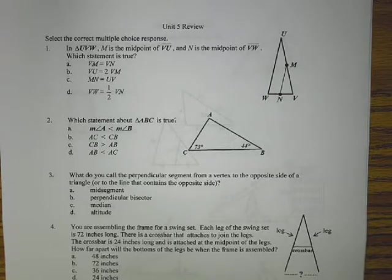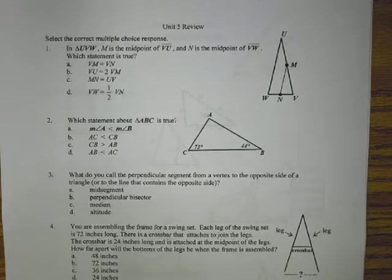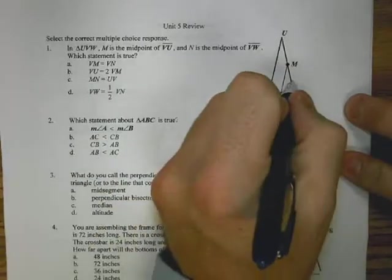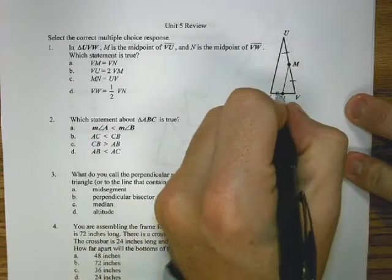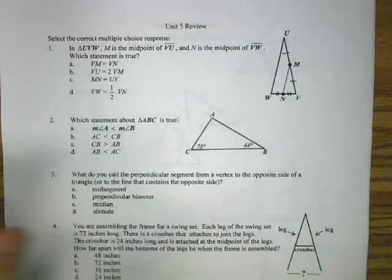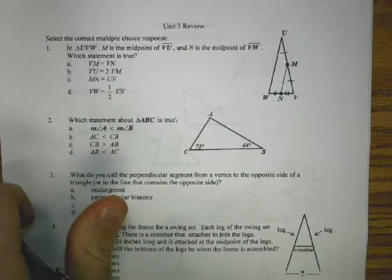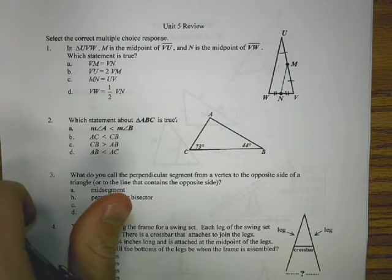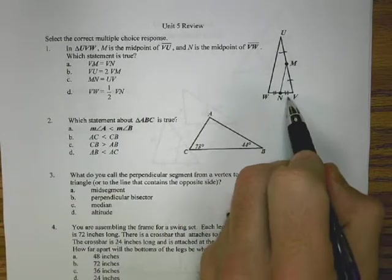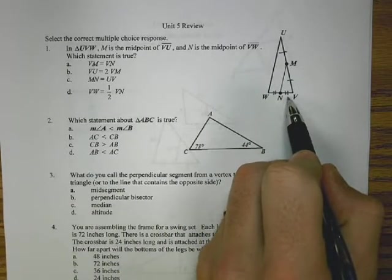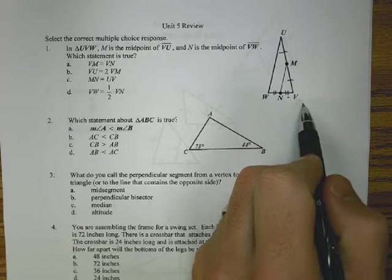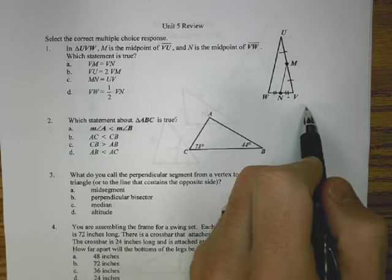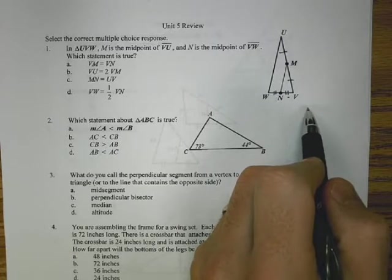So we start with number one. We have triangle U, V, W. M is the midpoint of VU, so let's mark that one. N is the midpoint of VW. And we need to find which statement is true. So if we go through and start eliminating things, at least finding what we know.